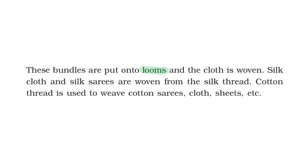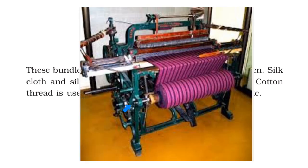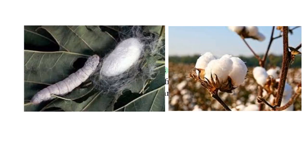What is a loom? A loom is a machine used by a weaver to make fabric out of thread. Silk thread is obtained from silkworms and cotton thread is obtained from a cotton plant.